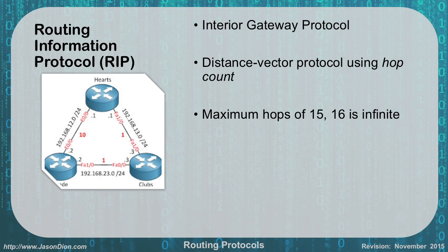Here we have three routers — hearts, spades, and clubs — all connected together. The metric used is hop count, each connection being one hop. If I wanted to go from hearts to spades, I'd go directly — one hop. But in reality, it would actually be faster to go from hearts to clubs, then to spades, because that path uses fast ethernet at 100 megabits per second, whereas the direct route uses regular ethernet at 10 megabits per second. Going 100 megabits over two hops is still faster than 10 megabits over one. But RIP doesn't account for speed — only hop count. Because of that limitation, a new protocol was invented.